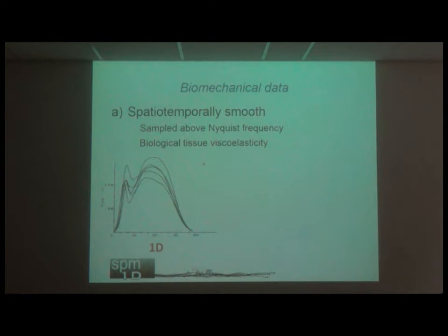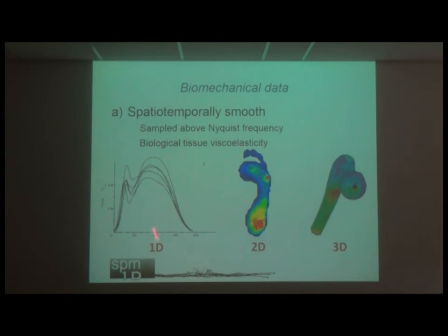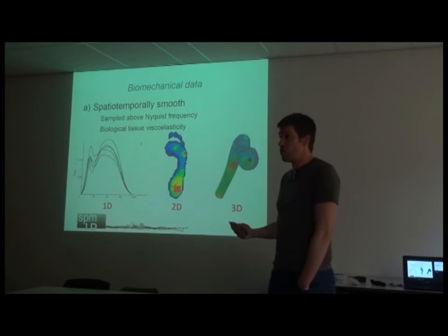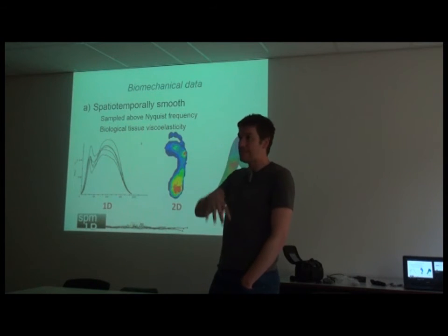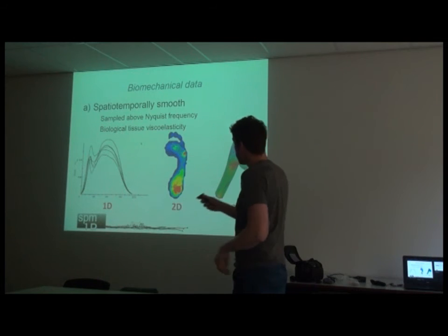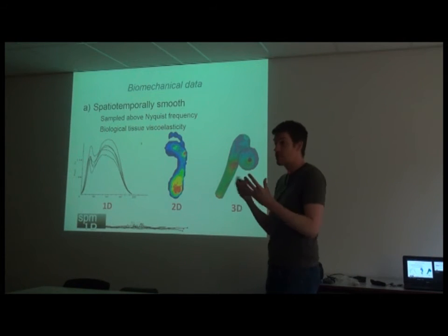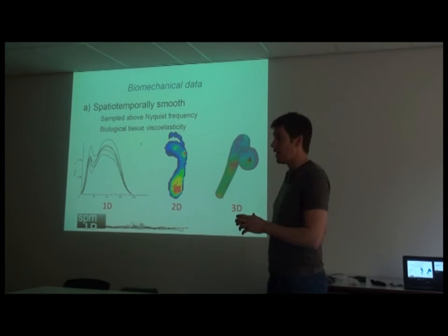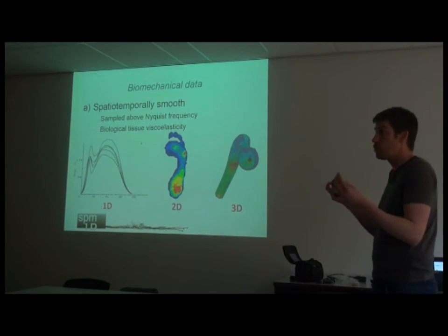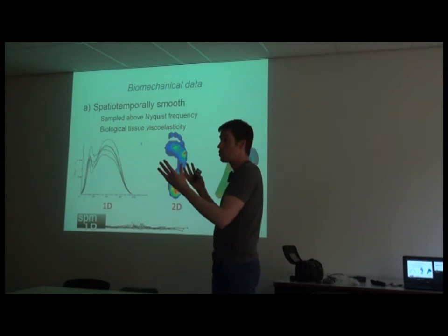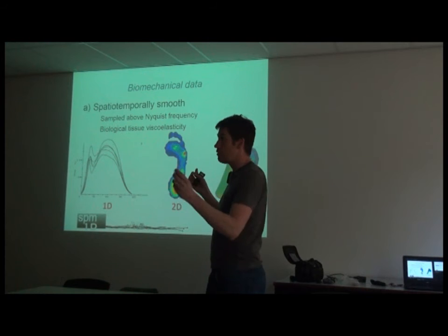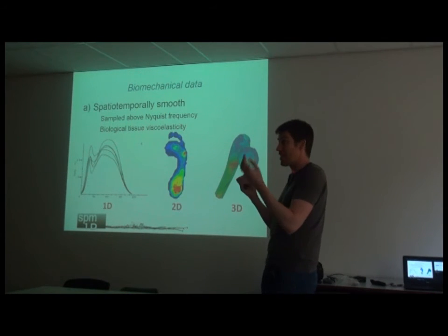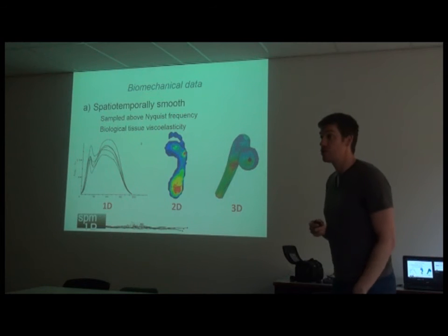We need to sample above the Nyquist frequency: if you want to observe a signal with a certain rapid fluctuation, you must measure it at least twice the frequency of that fluctuation. This applies to 2D and 3D as well — we have spatial dependency between adjacent pixels. This is where people apply a Bonferroni correction when doing multiple tests over 101 data samples in a normalized time curve. However, there is no valid ground for that correction because it depends on the smoothness of your signals.